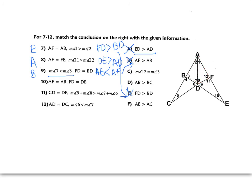Pause the video and do example ten on your own. AF equals AB, and FD equals DB. I also know AD is congruent to itself. I have all sides, so I have to be comparing angles. AD equals AD, which means the angles across from AD are going to be equal. So angle 3 and angle 12 are equal, which is answer C.